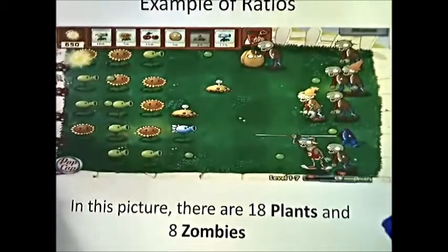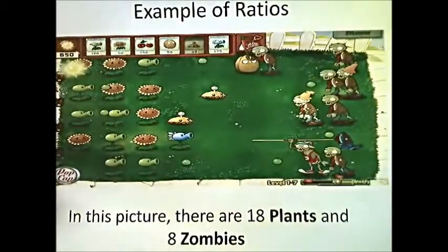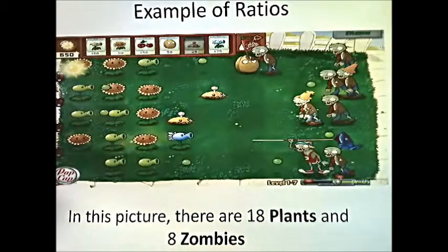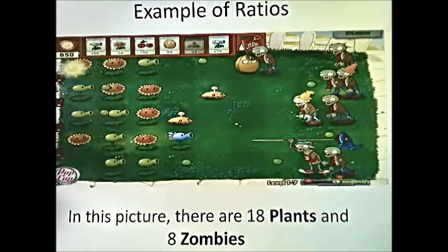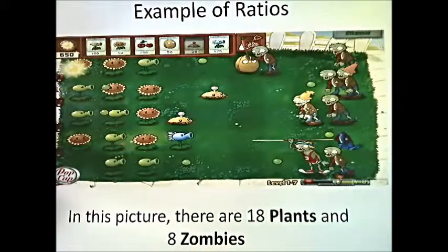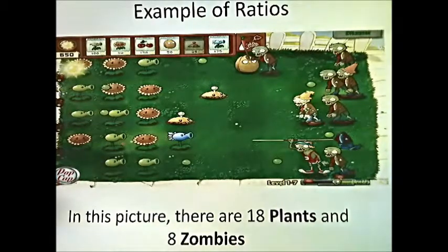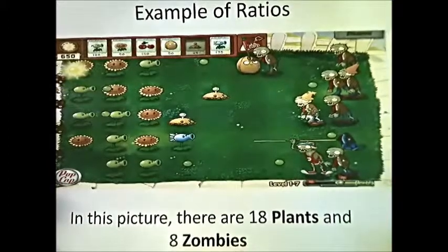A good example of ratios is probably something you're more familiar with. In this picture, if you count up the number of plants you'd find 18 plants on the left-hand side, and counting up the number of zombies on the right-hand side you'd get 8. So the ratio of plants to zombies would be 18 to 8, which simplifies down to 9 to 4 by dividing both numbers by 2.